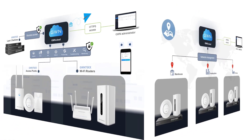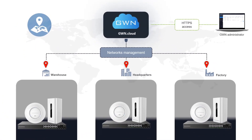To simplify the management of GWN devices, GWN.cloud allows you to create multiple networks and assign devices to the desired network. A network inside GWN.cloud could be used to represent a physical network, a client, branch office, geographical location, and so on.